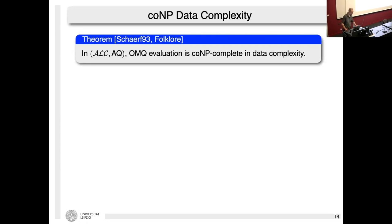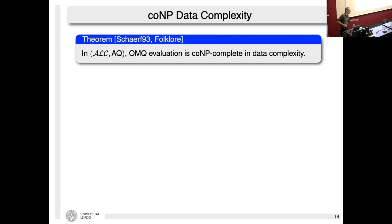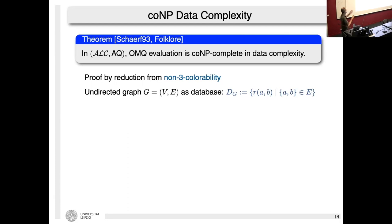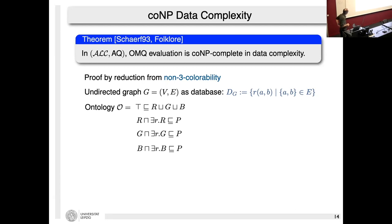Let me now speak about data complexity. For the ontology mediated querying language using ALC ontologies and atomic queries, OMQ evaluation is co-NP complete in data complexity. This is bad news for applications, but good news for research as it is a starting point. The co-NP completeness can be shown by reducing non-3-colorability: an undirected graph is viewed as a database with a single binary relation, and 3-colorability is expressed as an ALC ontology.